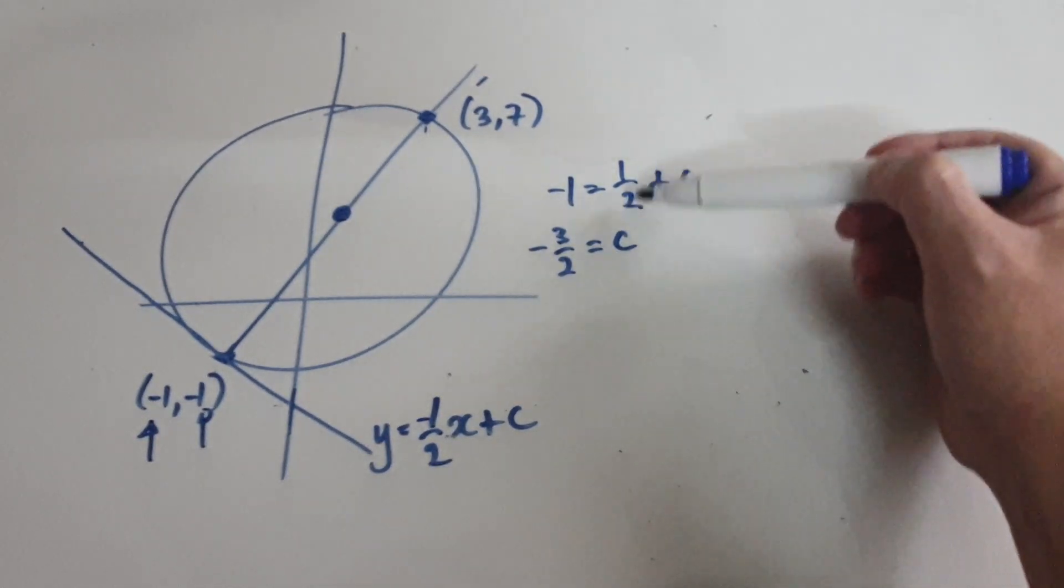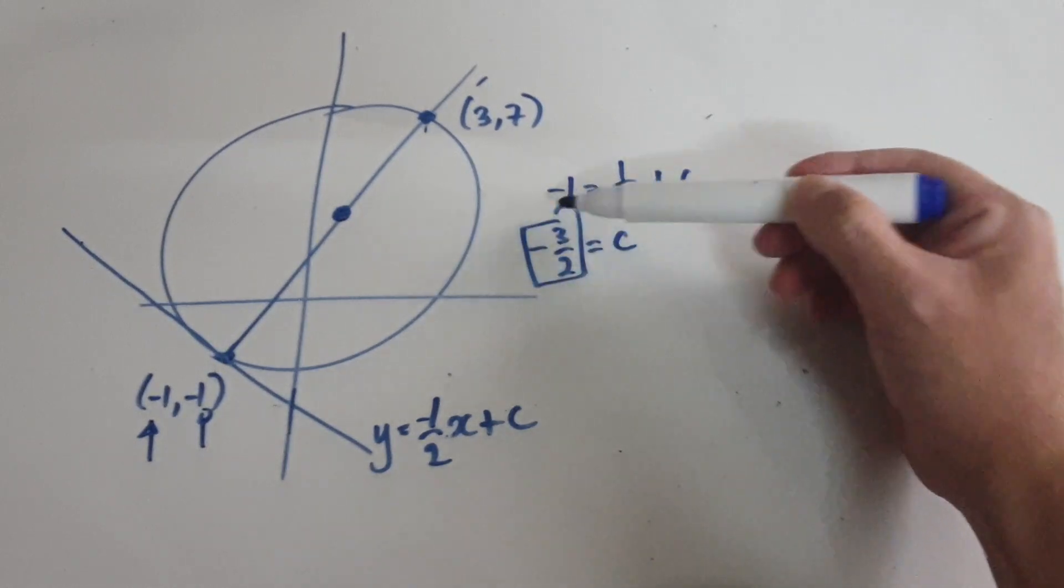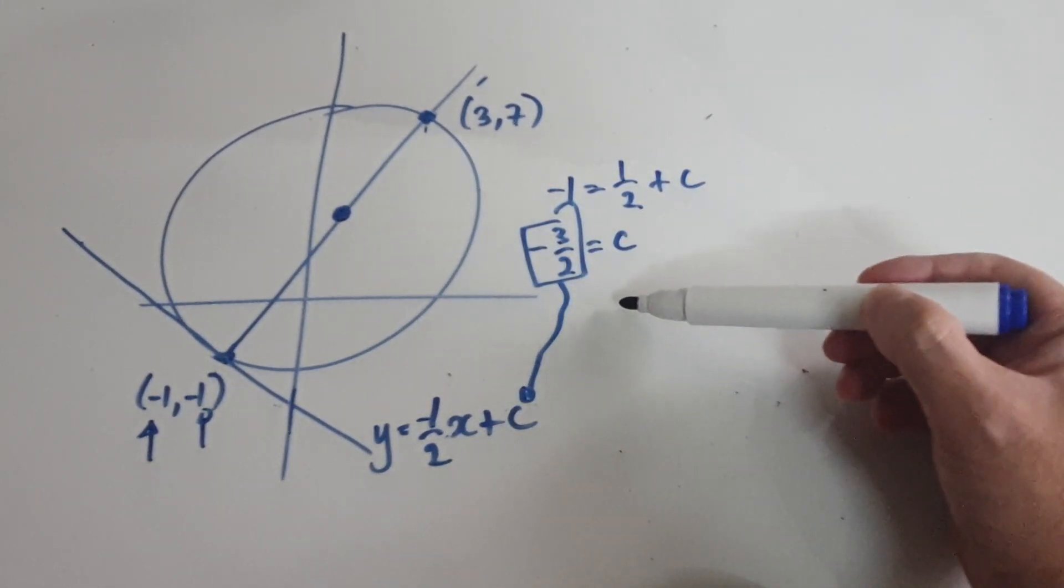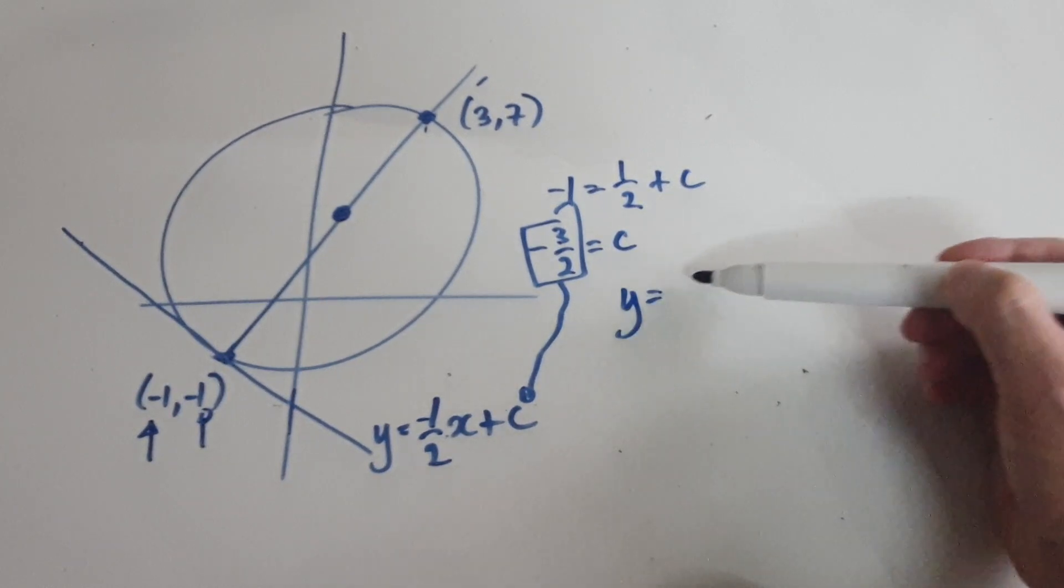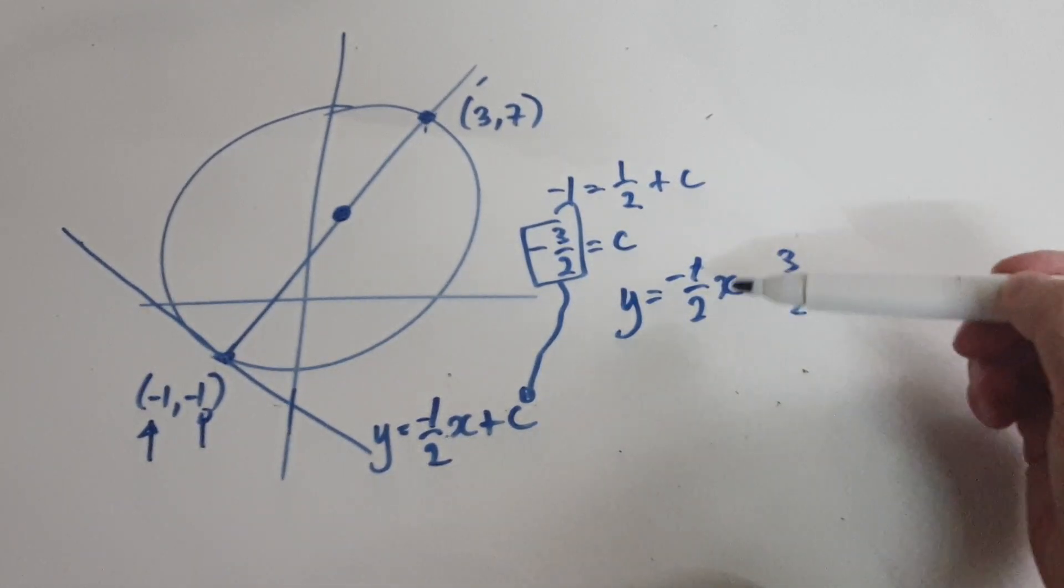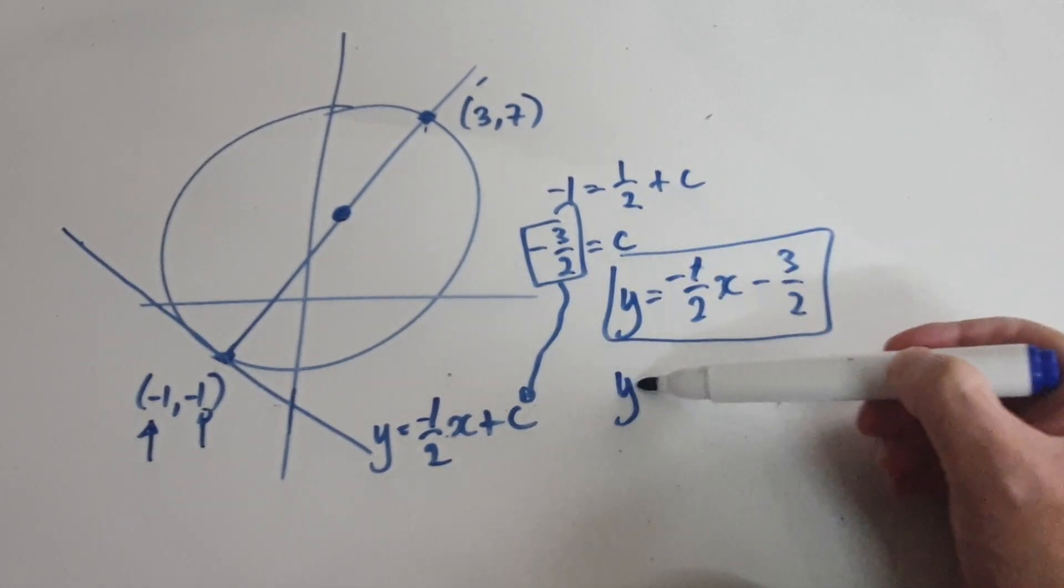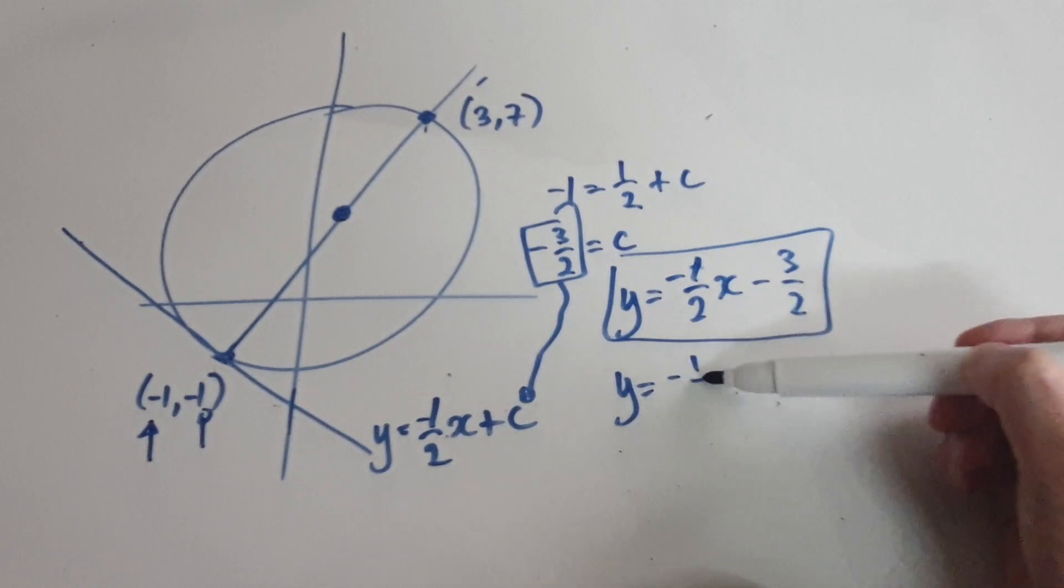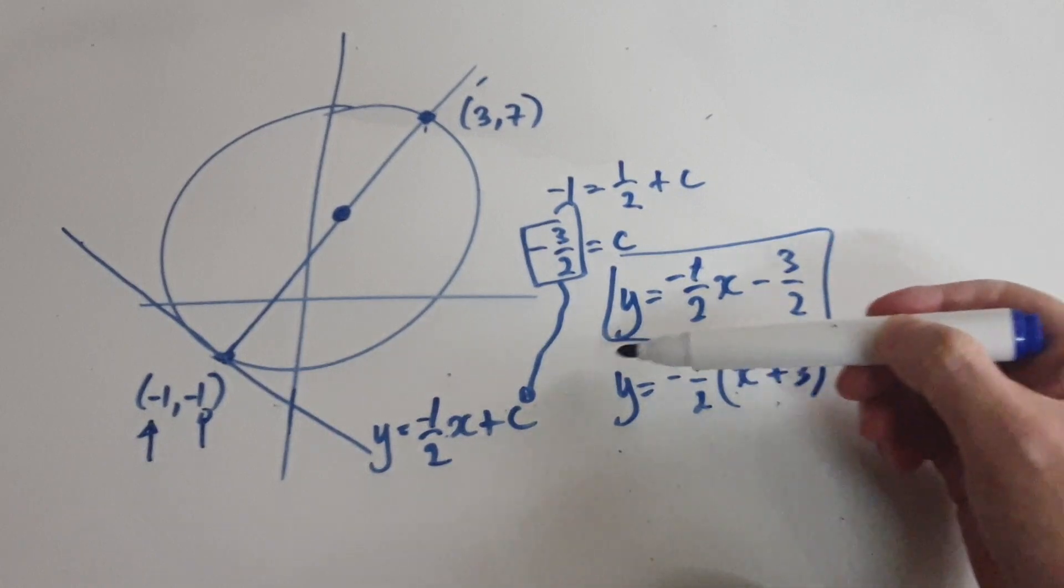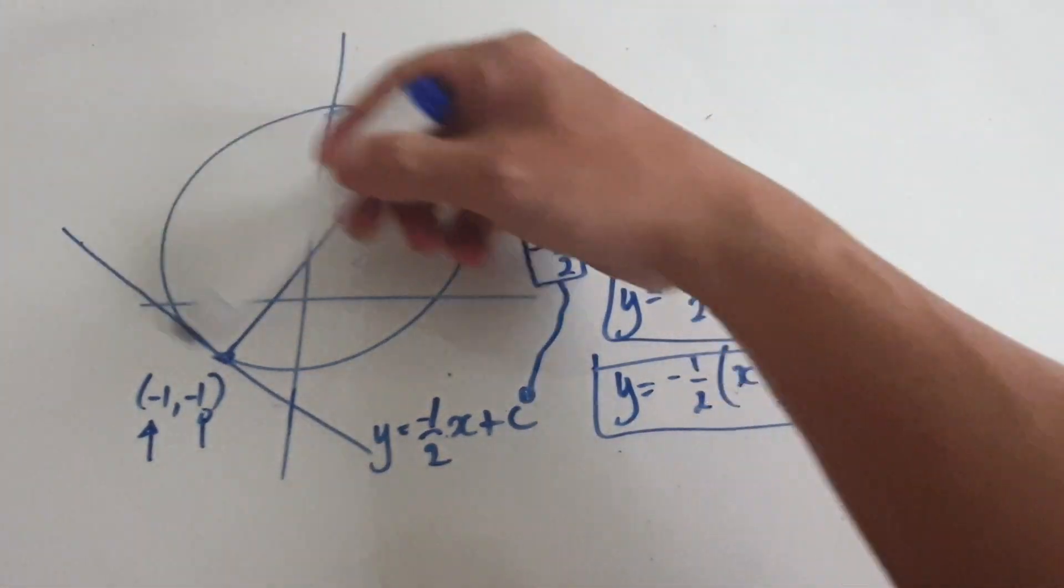So now you can take step by step if you want, but I'm just going to jump to this. So this is your C. Now put it back into here. So our final equation would be Y equals negative 1/2 X minus 3/2. So this is our final answer. You can rewrite this in many ways, one of which is to factor out the negative 1/2. So that would be X plus 3. So this is another way of expressing the equation of this tangent line.